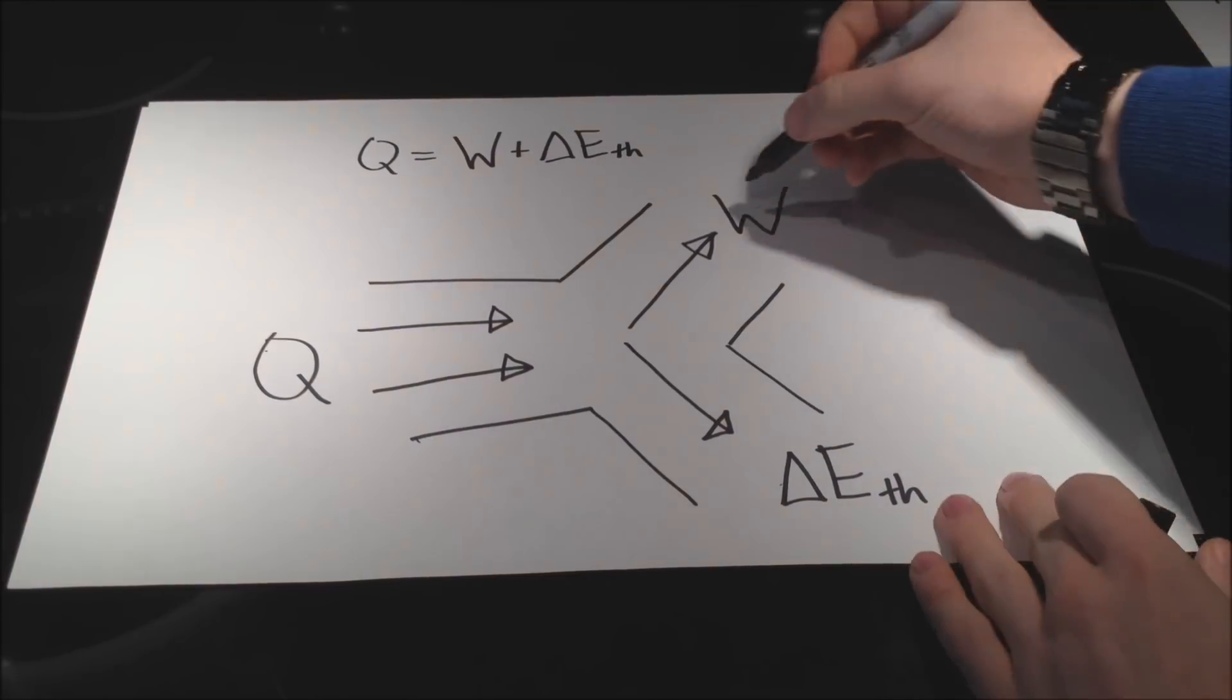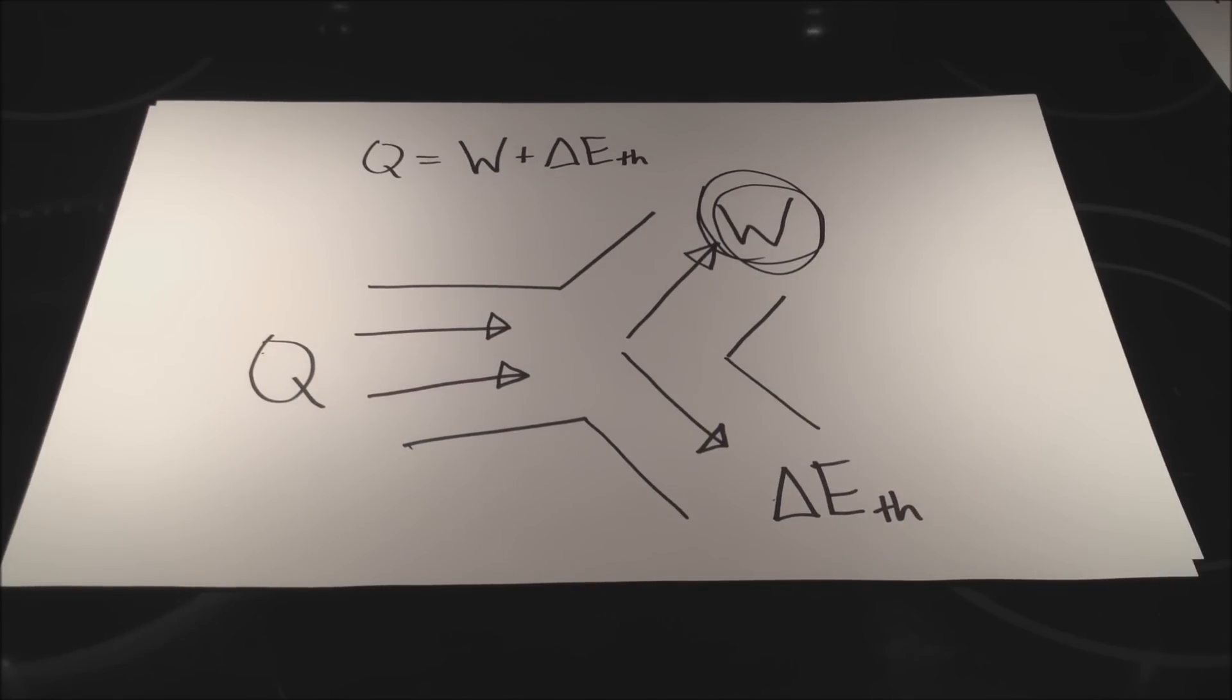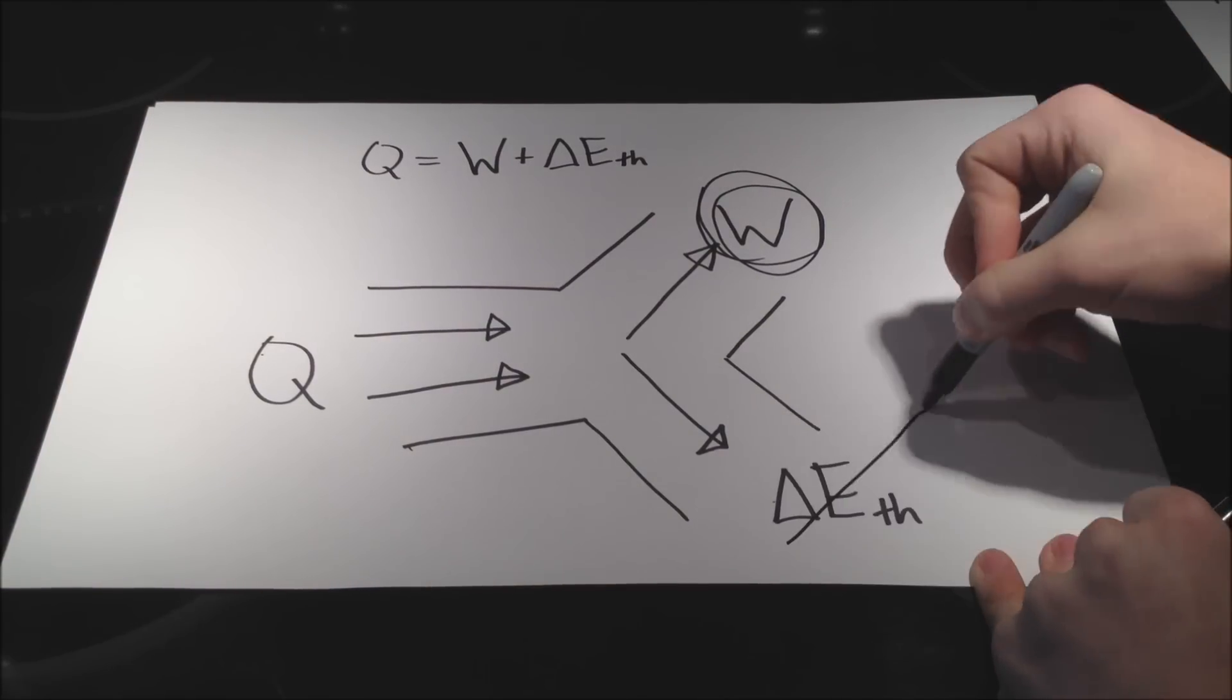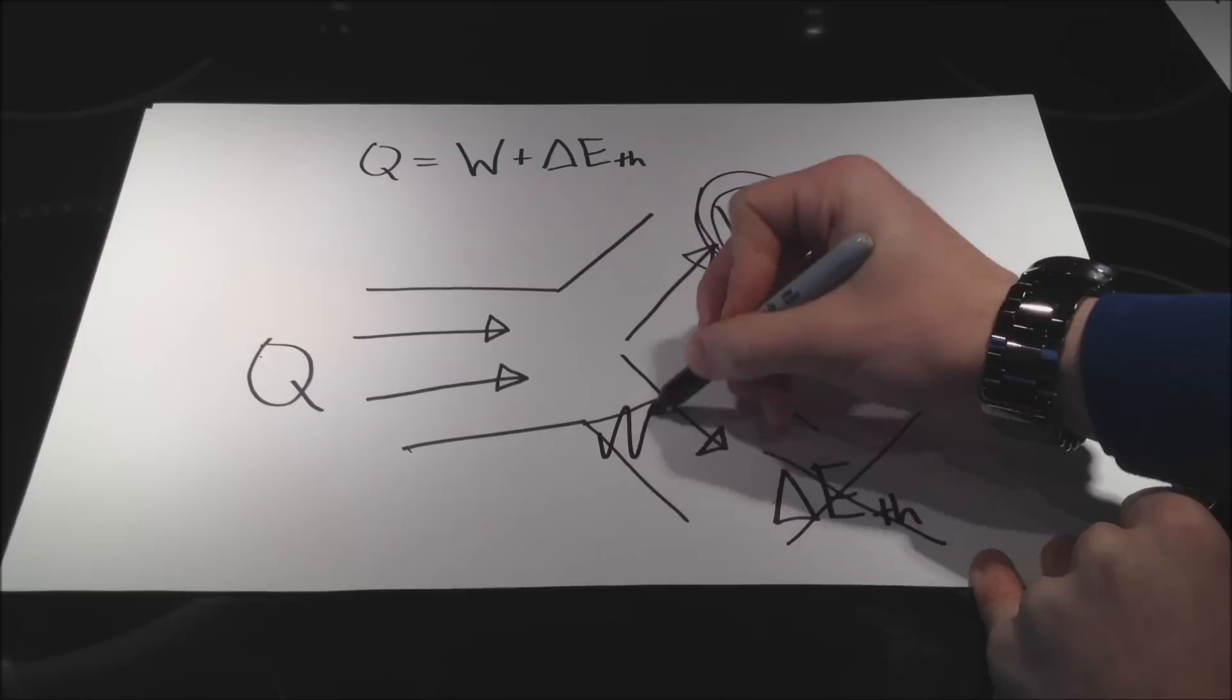So keeping in mind that work here is the goal, you should really start thinking about isothermal processes. In isothermal processes, there is no delta E-therm, so we can effectively ignore this branch down here.